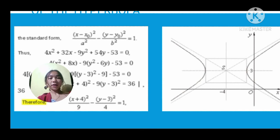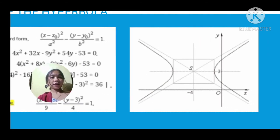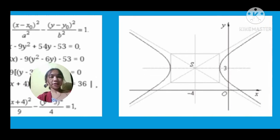The center is at (-4, 3). So this is what the graph looks like for this example.